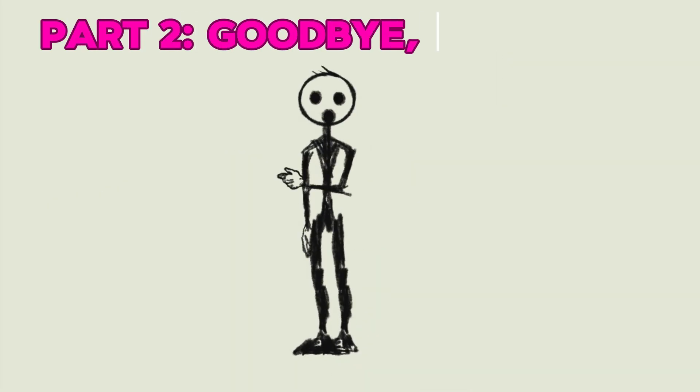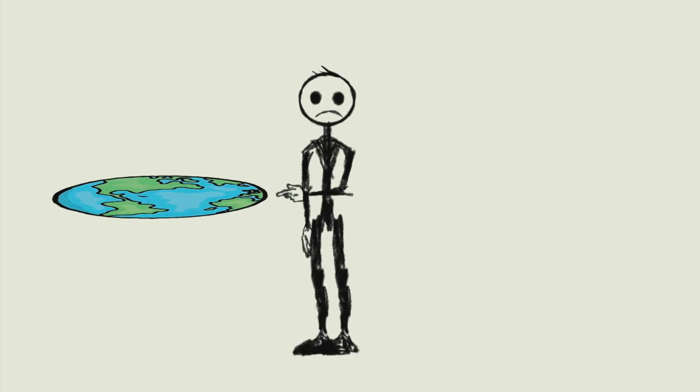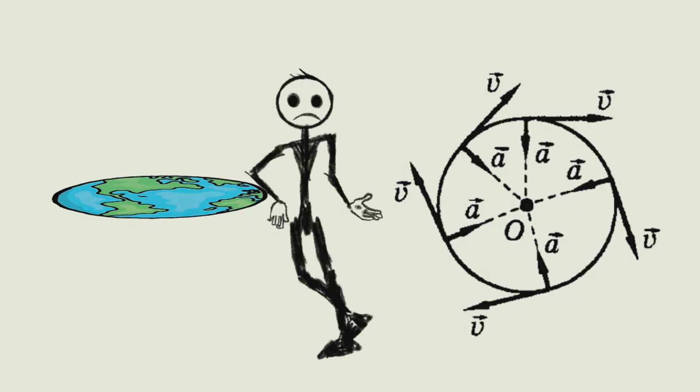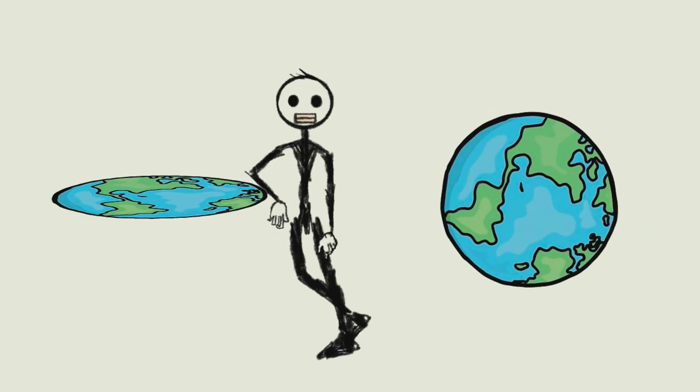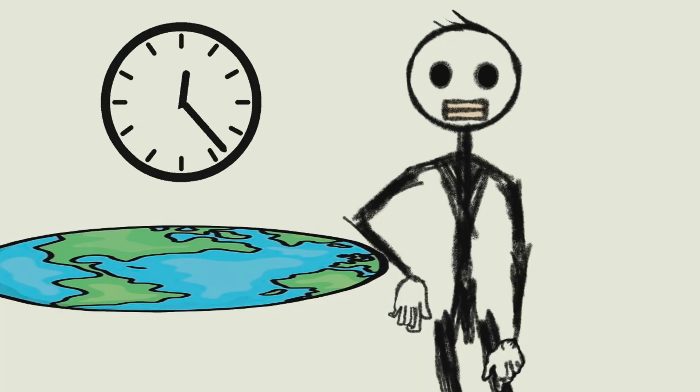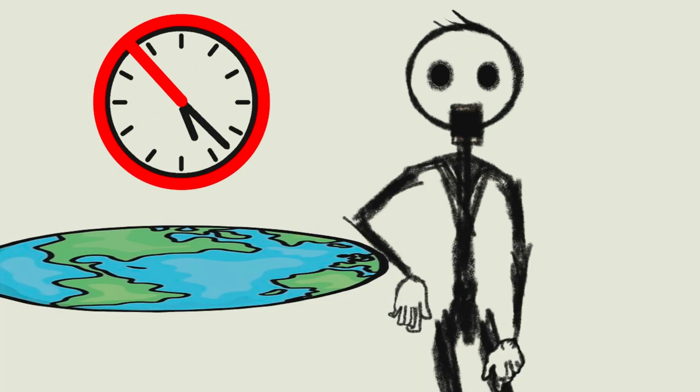Part 2. Goodbye Rotation. The next catastrophic problem is that a flat Earth would be physically incapable of rotating normally around its axis, as our spherical planet does. What does this mean for us? It means the end of the familiar 24-hour cycle of day and night.